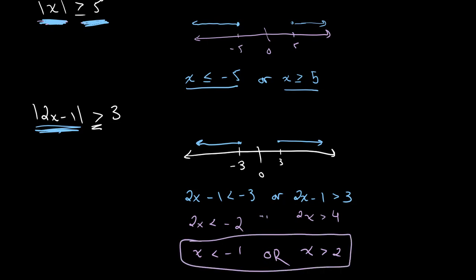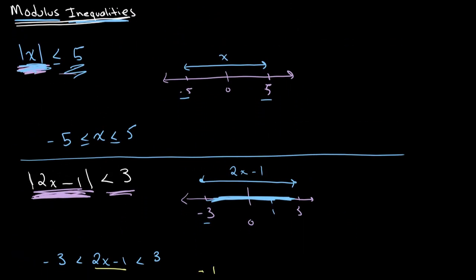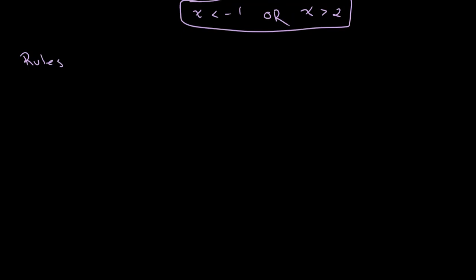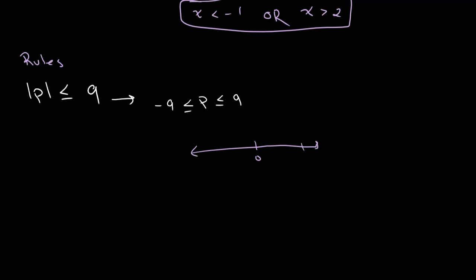From what we just derived, when the absolute value is less than or greater than a number, we can come up with two rules. The first rule: when the absolute value of p is less than or equal to q, then p will be less than or equal to q and greater than or equal to negative q. On a number line where this is 0, positive q, and negative q, the value of p falls somewhere between negative q and q, because its distance from 0 is less than that of q.